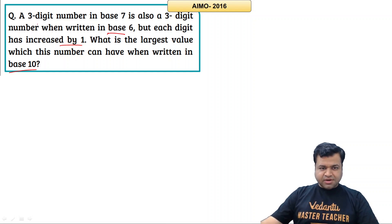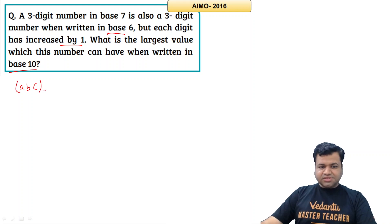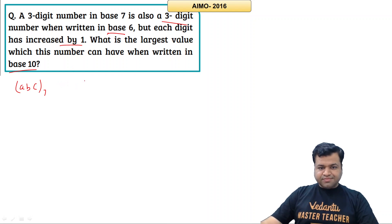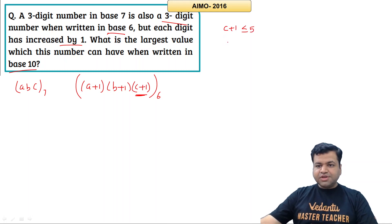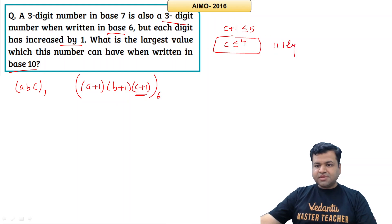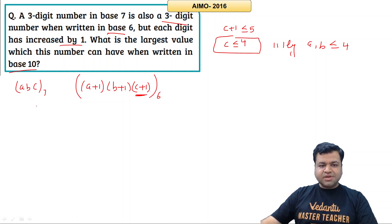Let's assume the three-digit number in base 7 is ABC. The same number when written in base 6 is also a three-digit number, but each digit is increased by 1 — so in base 6 the number is (A+1)(B+1)(C+1). Since these are single digits in base 6, C+1 must be less than or equal to 5, so C ≤ 4. Similarly, A and B must also be less than or equal to 4. Let's write both representations in base 10 and equate them.